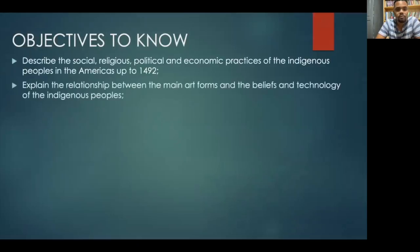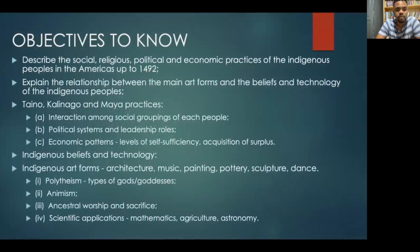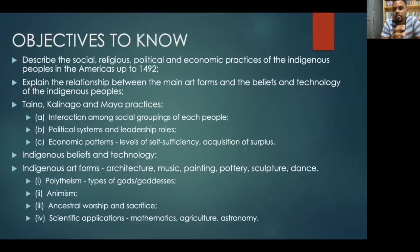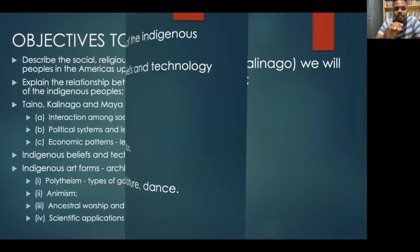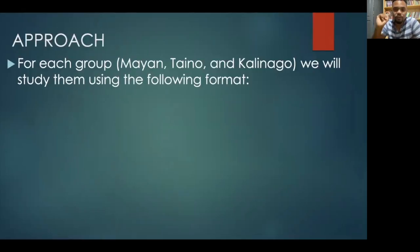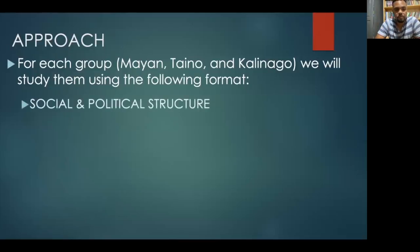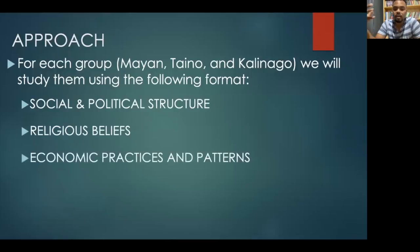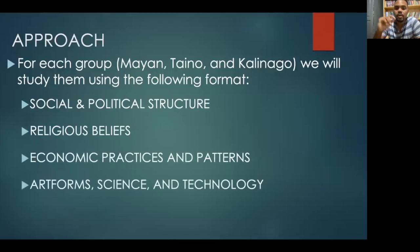The main objectives required when looking at the Mayans, the Taino, and the Kalinago come from the CSEC syllabus, which can be a bit difficult. To simplify it, for each group we will study them using the following format: their social and political structure, their religious beliefs, their economic practices and patterns, and their art forms, science, and technology. This will help us cover the required objectives.